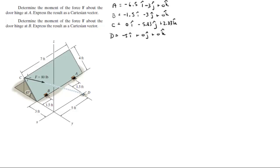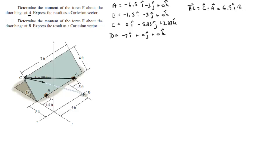To find the moment about A, the first thing we need to do is find vector AC. AC is C minus A, and it equals 6.5i minus 2.83j plus 2.83k.